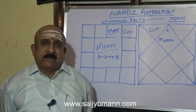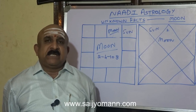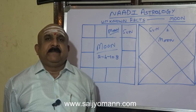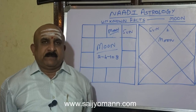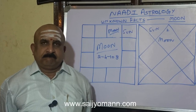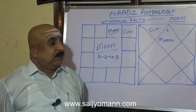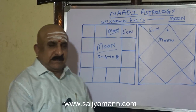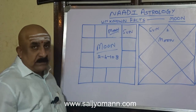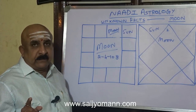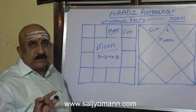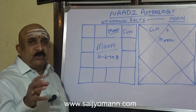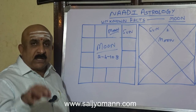Sun's speech is practical, and that is the reason she will have a little bit of hurdles in the domestic family life. When Mars sits in the 2nd house, she will be very rough in her talks.